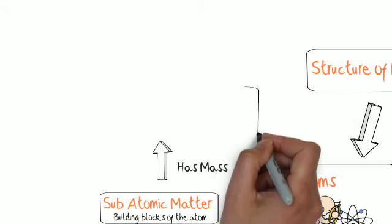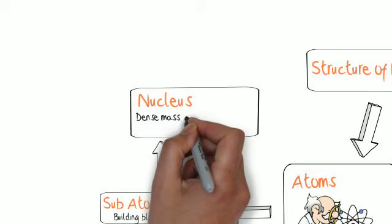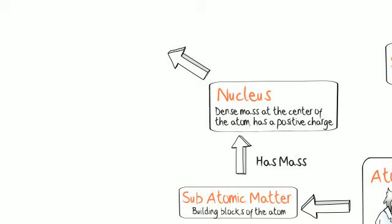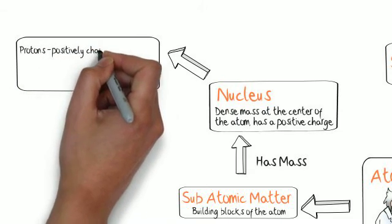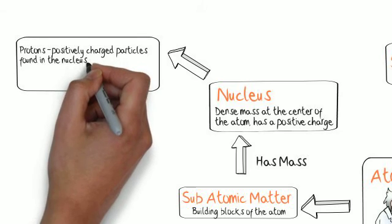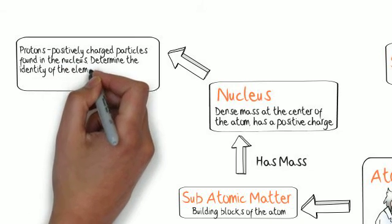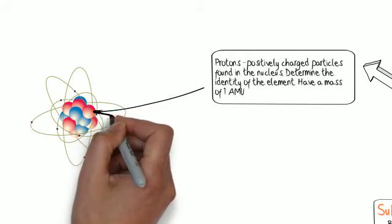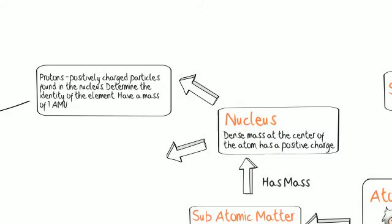And there are subatomic particles or matter that have mass. And these ones that have mass are found in the nucleus. And the nucleus is a dense mass that's at the center of the atom and has a positive charge. The two particles or types of subatomic matter that are found in the nucleus are the protons, which are positively charged particles that exist in the nucleus. And they have a mass of what is known as one atomic mass unit or one AMU. And the protons determine the identity of the element. So I'm going to draw an arrow here to a proton. We're going to say the protons are the red particles in the nucleus.